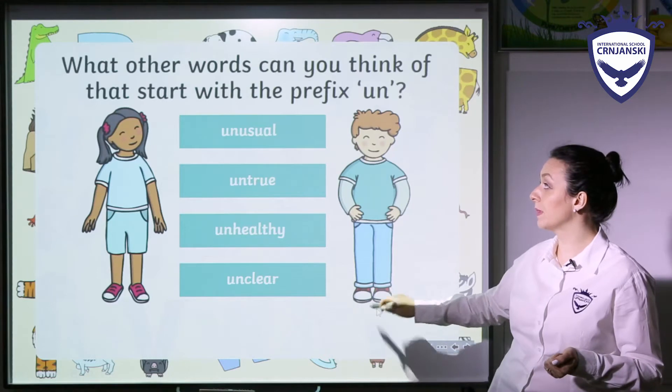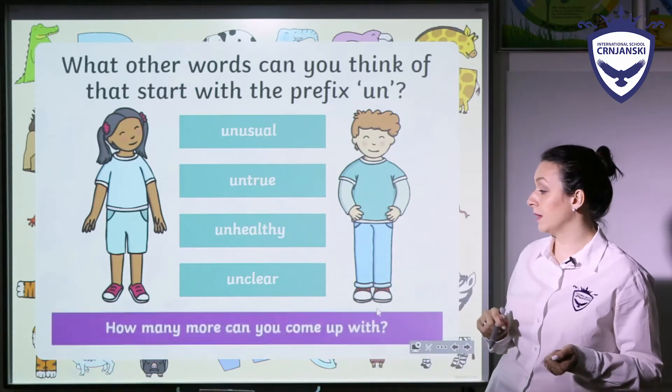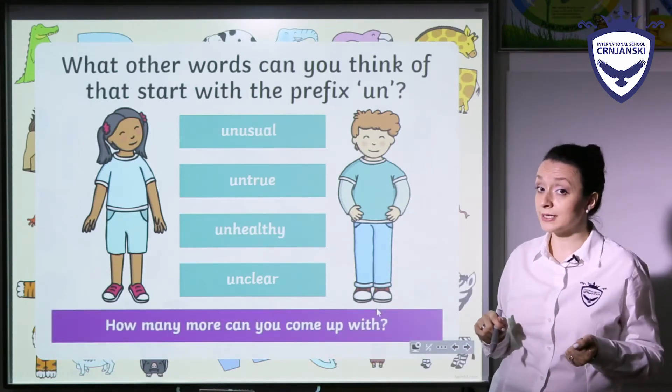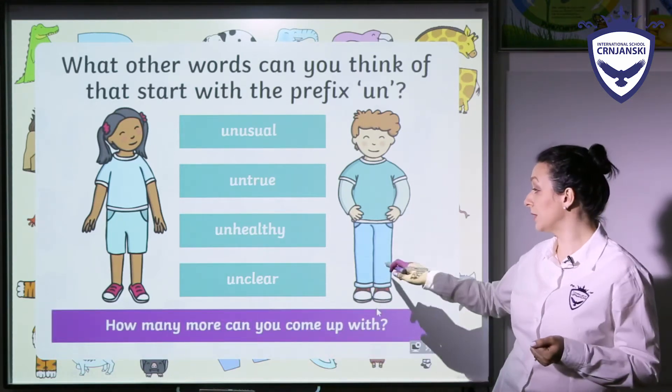Think about the sentences you can make by using these words with the prefix un. Here are some more examples you can use by adding the prefix un — for example unusual, untrue, unhealthy, unclear. Think about more examples that you can make.